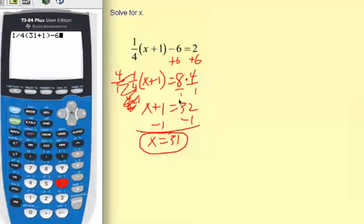And if this 31 is correct, it should equal the 2. And it does. So I know that x equals 31 is correct.